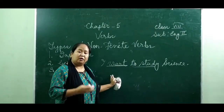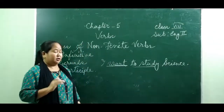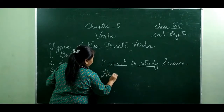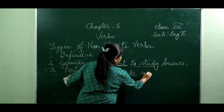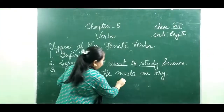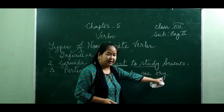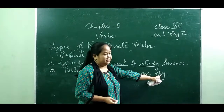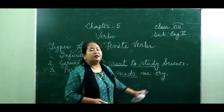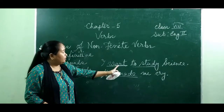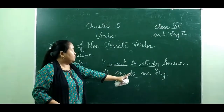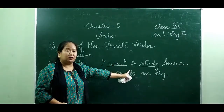Sometimes we use infinitive without the preposition 'to' — that we call bare infinitive. For example: 'He made me cry.' Here the verb 'made' is the main verb, and 'cry' is a non-finite verb — it doesn't indicate any tense. The infinitive is used without 'to,' so we call this a bare infinitive. Infinitive without preposition 'to' is called bare infinitive.